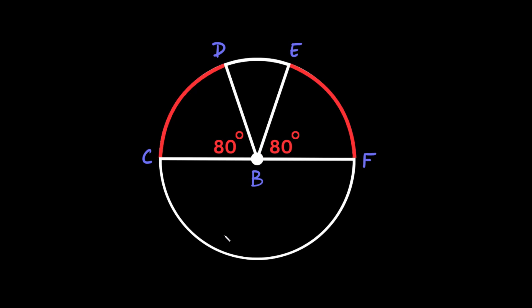What's up you freaking geniuses? In this video I'm going to teach you how to identify congruent arcs. For arcs to be congruent they need two things: they have to have the same radius and the same central angle. We're going to go over several examples and all we're going to check is if the red arcs are congruent.